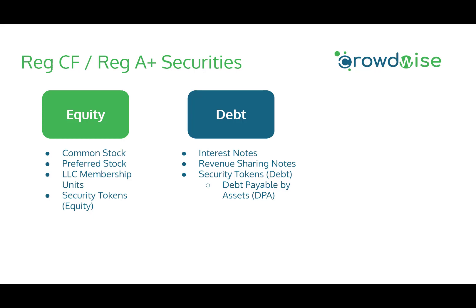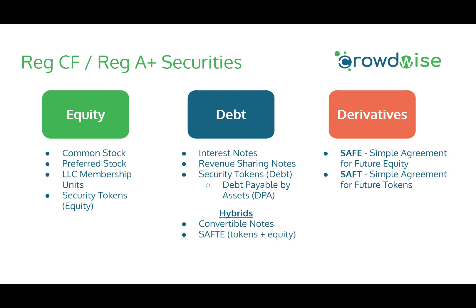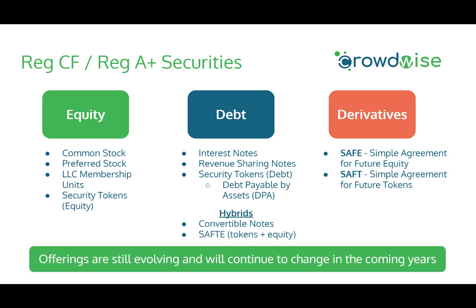For derivative securities, you'll see SAFEs — simple agreements for future equity — or SAFTs, simple agreements for future tokens. And of course, there are hybrid securities such as convertible notes, which combine both debt and equity, as well as SAFDs, which are tokens plus equity. Overall, just remember that offerings are still evolving in the equity crowdfunding industry and will continue to change in the coming years.